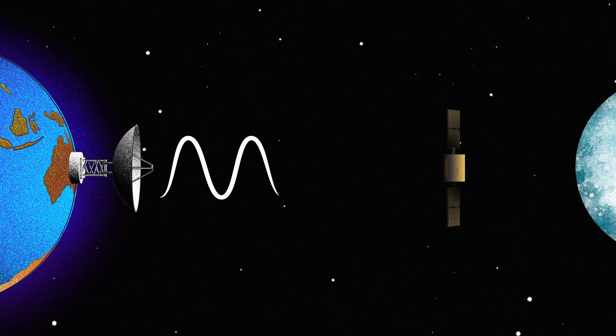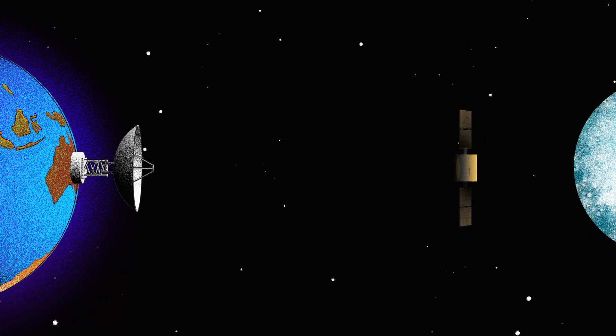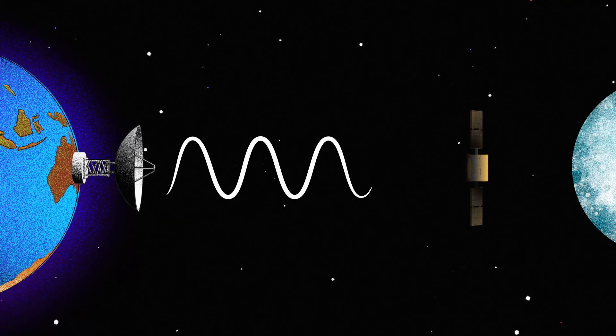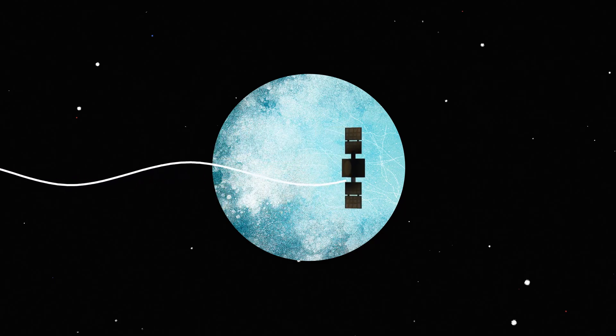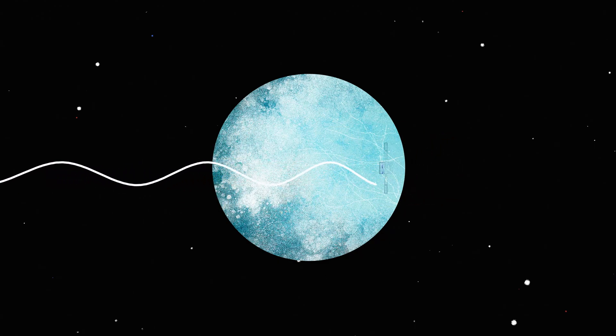After reaching its destination, a spacecraft uses radio antennas to communicate with the Deep Space Network on Earth, which in turn transmits radio signals back to the spacecraft. Every spacecraft travels in a predetermined path, emitting radio signals as it orbits around its target.